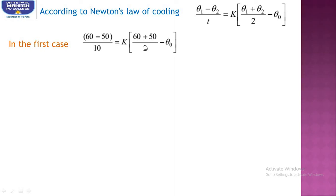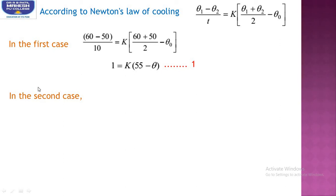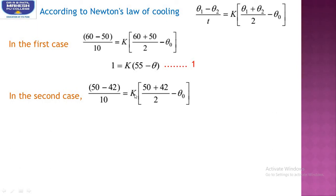Solving the first equation: (60 − 50)/10 = 1, so 1 = k(55 − θ₀). For the second case, from 50 to 42°C again taking 10 minutes: (50 − 42)/10 = 0.8 = k(46 − θ₀). Let this be equation 2, where the mean temperature is (50 + 42)/2 = 46.